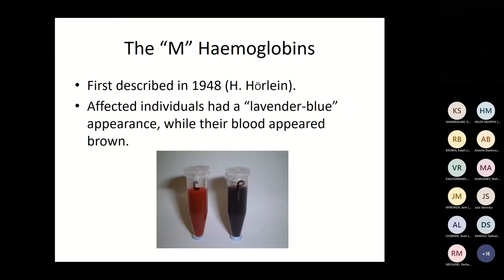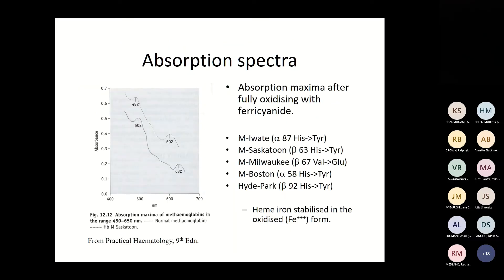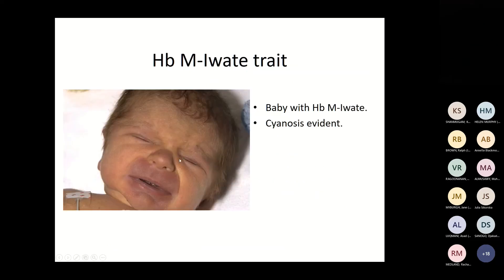M haemoglobins were first described in 1948. Affected individuals had a lavender-blue appearance and brown blood. Absorption spectra can identify them as they absorb differently. Variants include Hb M Saskatoon, Boston, and Hyde Park. A baby with evident cyanosis around the mouth may have haemoglobin M.